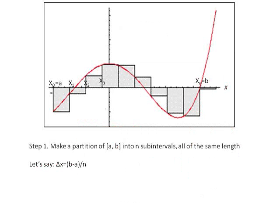Step 1. Make a partition of the interval a to b into n subintervals, all of the same length, such that delta x is equal to b minus a over n. Define x0 to be a. Then x1 will be a plus delta x, x2 will be a plus 2 delta x, and x3 will be a plus 3 delta x. For the value xk in the interval a to b, it will be a plus k delta x.